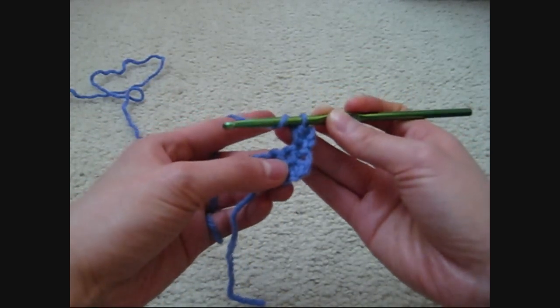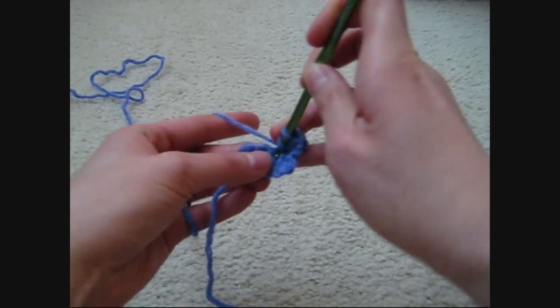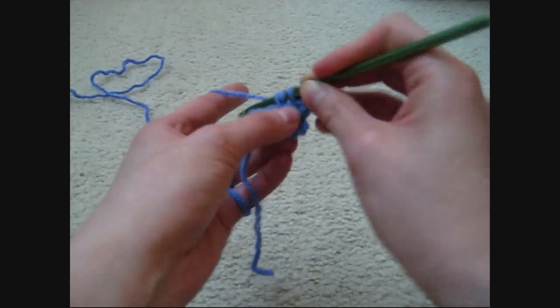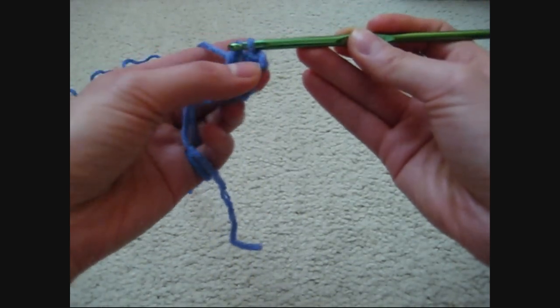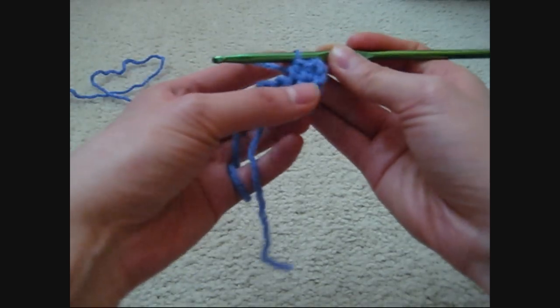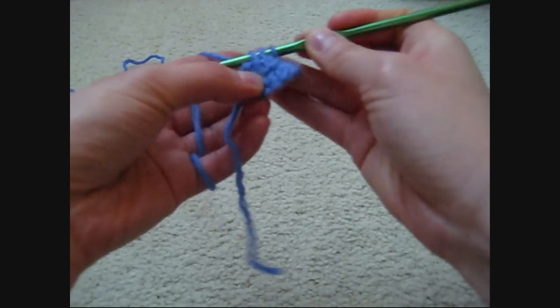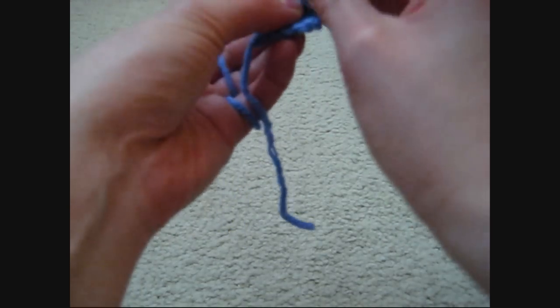I'm showing you again: yarn over, pull the yarn through, then pull the yarn through 3 loops. That's all you do for the half double crochet.